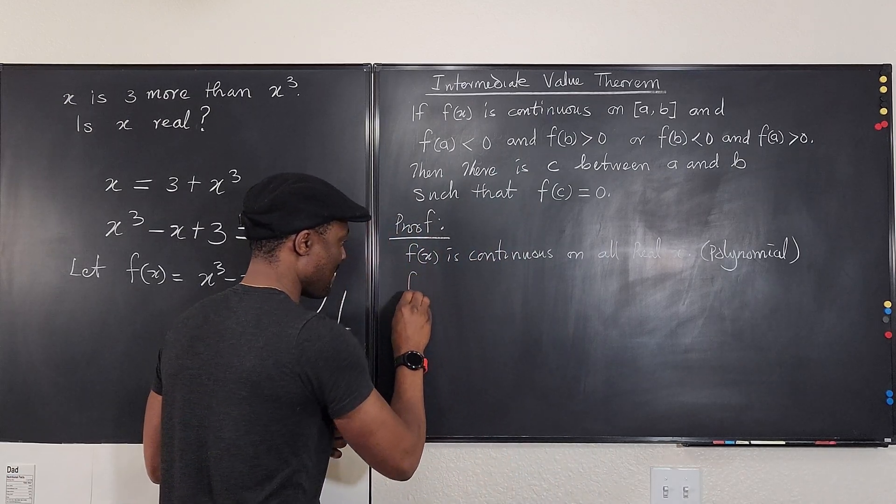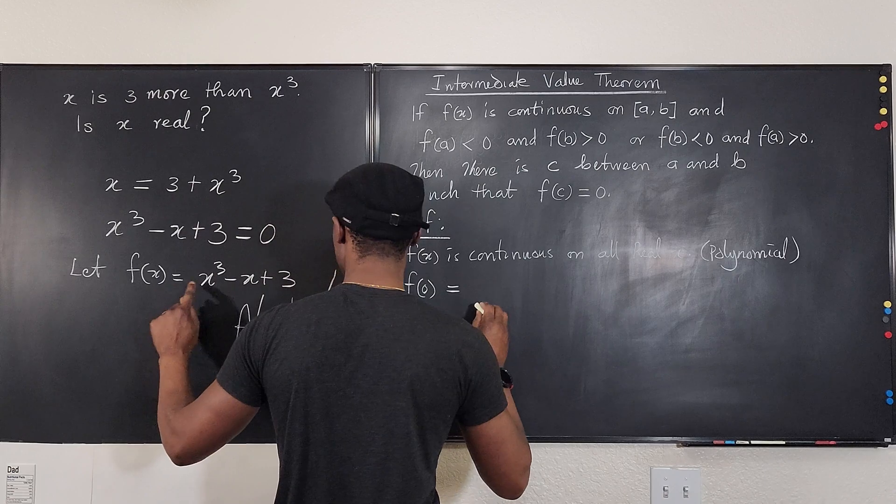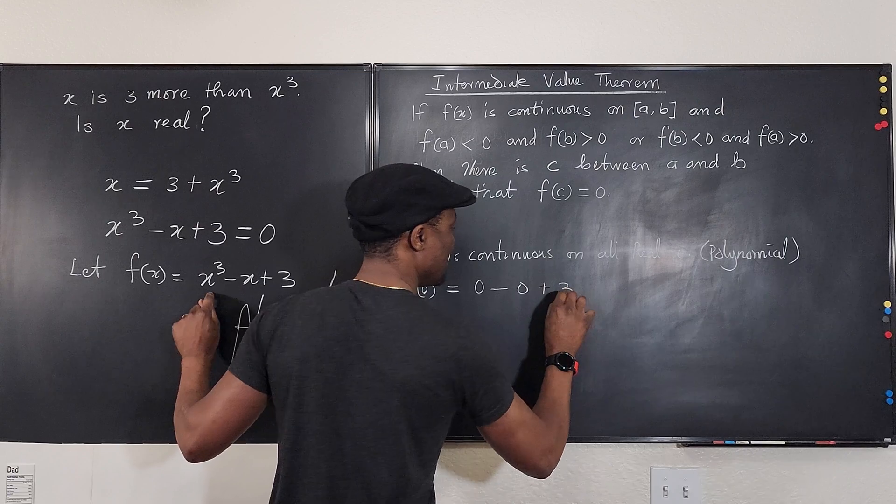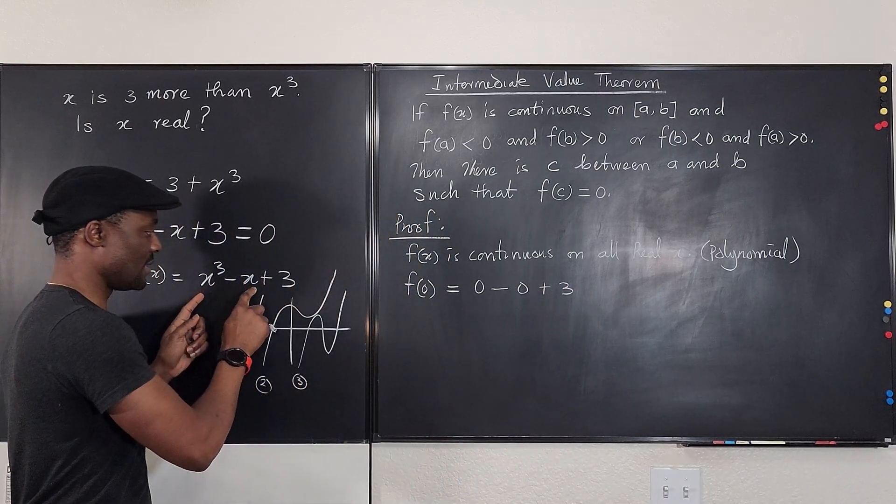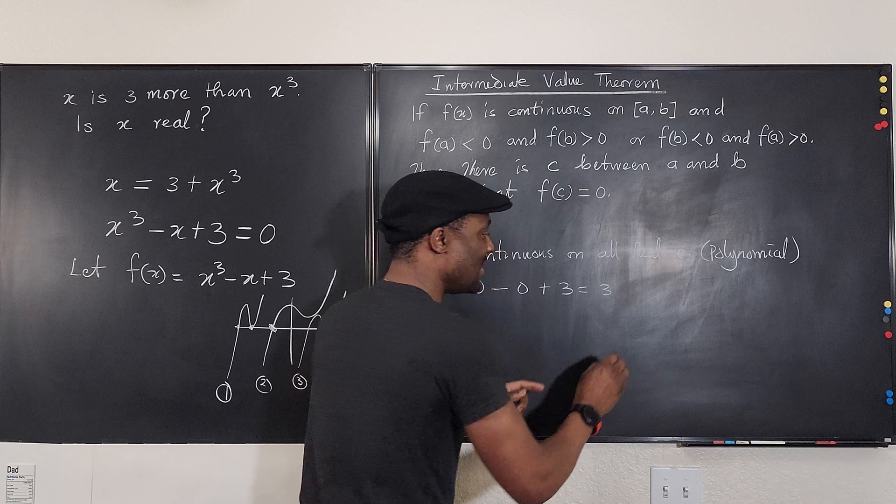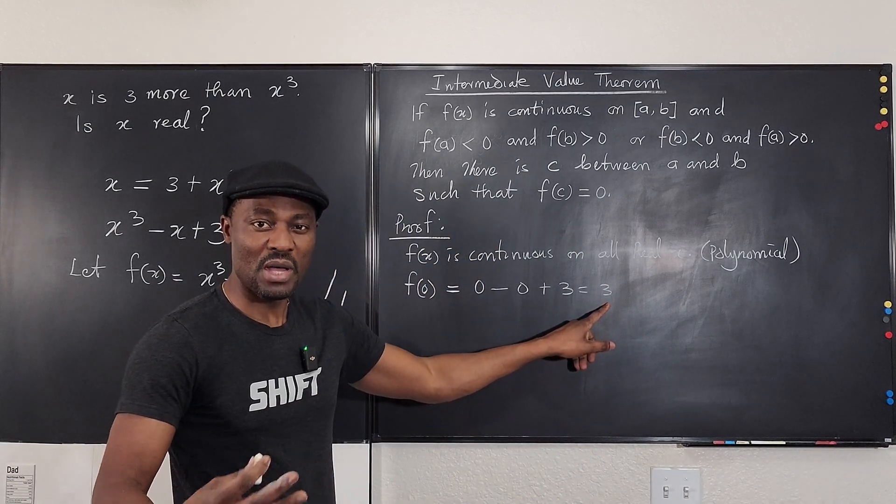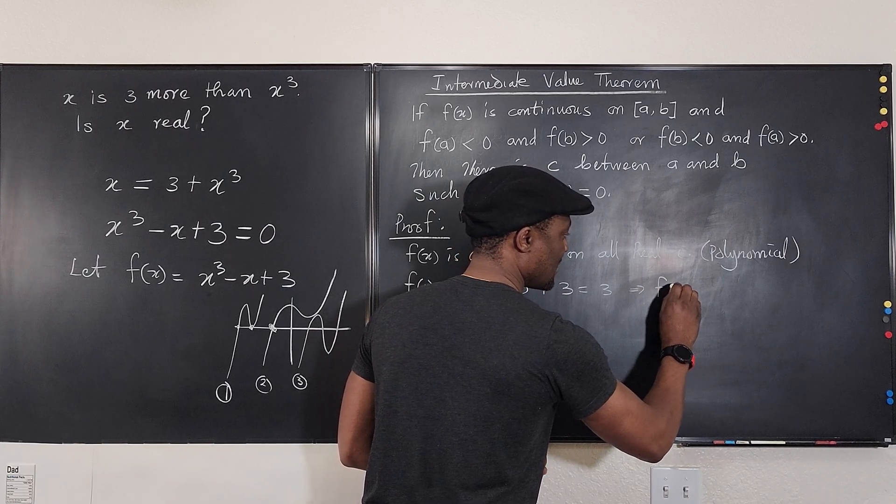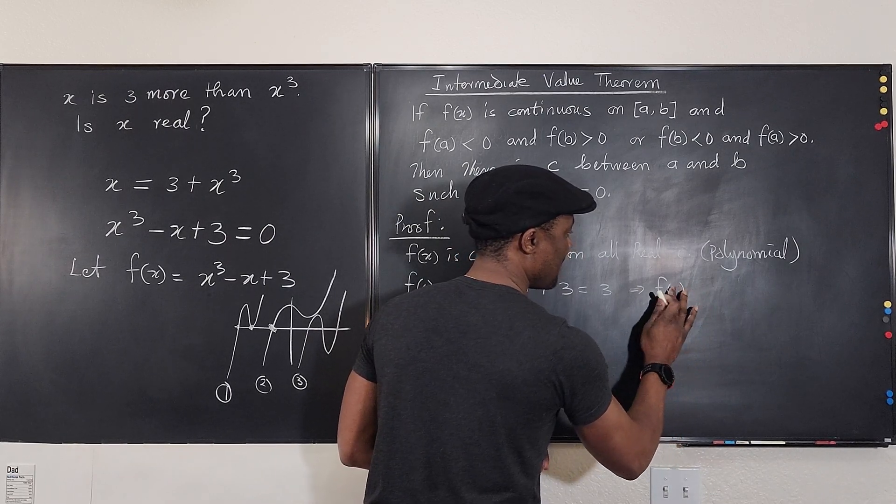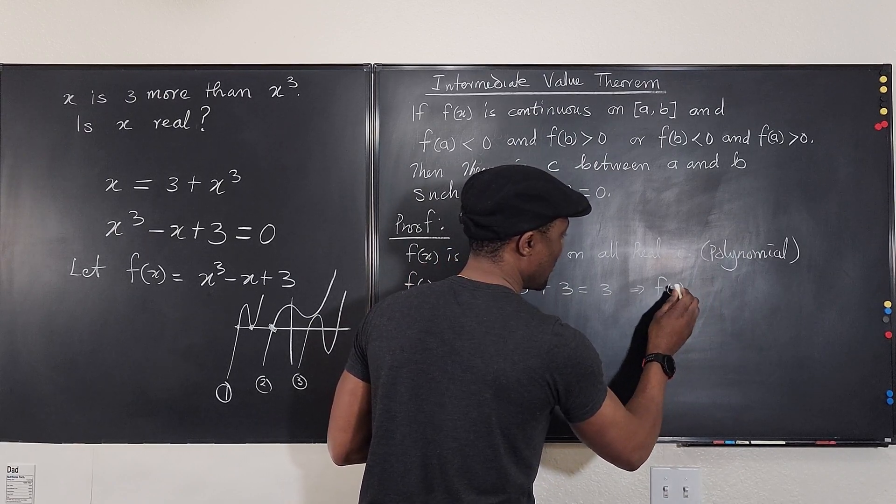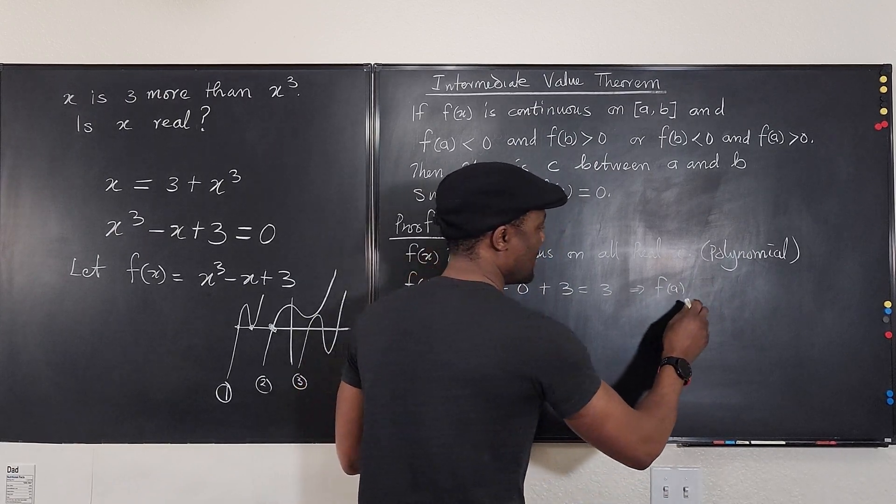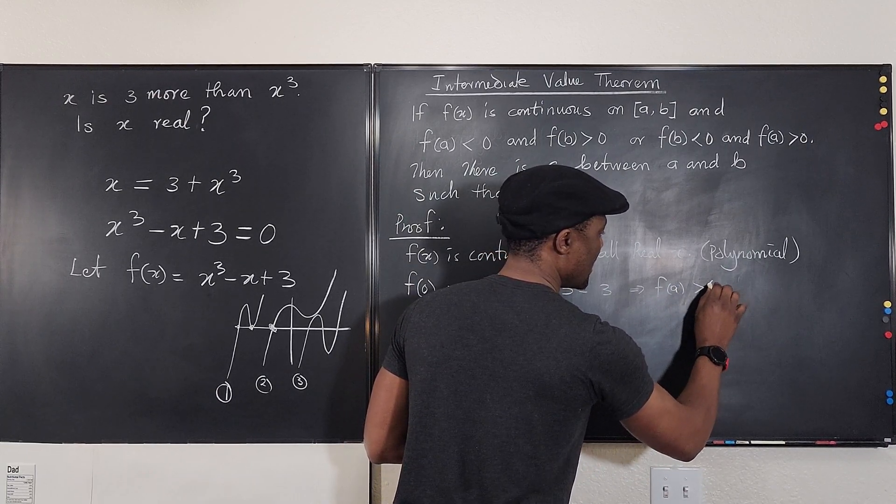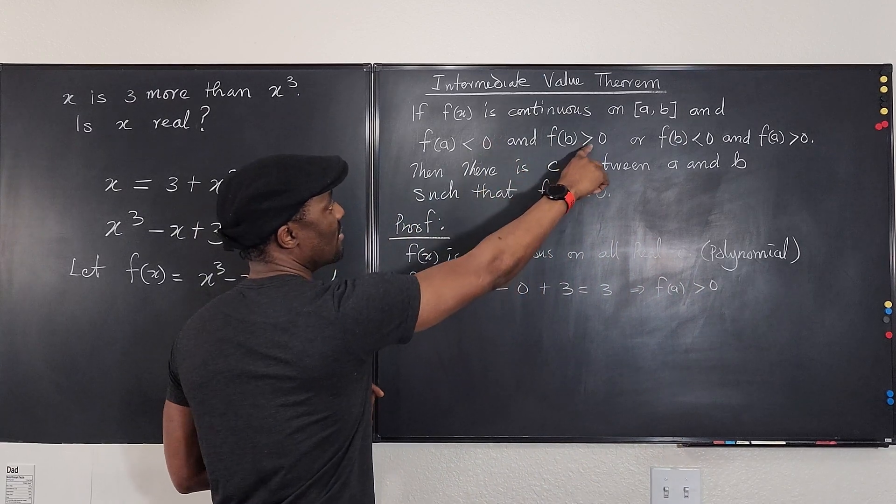F(0) will be equal to zero minus zero plus three. Zero minus zero plus three is going to give you three. This value is positive, so it's greater than zero. So this means that f(x) here, or let's call it f(a) or f(b), it doesn't matter, will be equal to three, which is greater than zero. So we've met this condition.